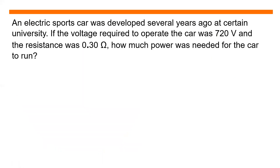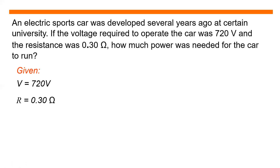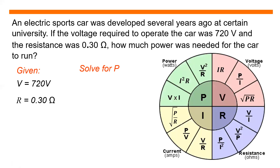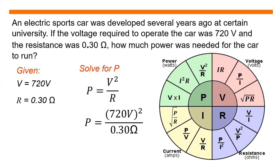Let's solve problems involving power and Ohm's Law. An electric sports car was developed at a certain university. If the voltage required to operate the car was 720 volts and the resistance was 0.30 ohms, how much power was needed? Given: voltage equals 720 volts, R equals 0.30 ohms. Solving: P equals V squared over R, that is 720 volts squared divided by 0.30 ohms. We get 16.33 kilowatts.